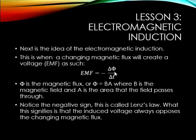So then, as it turns out, the magnetic field, if it's changing in time, meaning the flux is changing, will create a voltage, or an EMF. The EMF is equal to the negative change in flux over the change in time. And this is actually called Faraday's Law. The phi, that's how that's pronounced, it's a Greek letter phi, or the magnetic flux is BA, where B is the magnetic field, and A is the area that the field passes through. Also, another thing to note is the negative sign. This is actually called Lenz's Law. What this signifies is that the induced voltage always opposes the changing magnetic flux. So if the field is increasing, you get a negative voltage. If the flux is decreasing, you get a positive voltage.